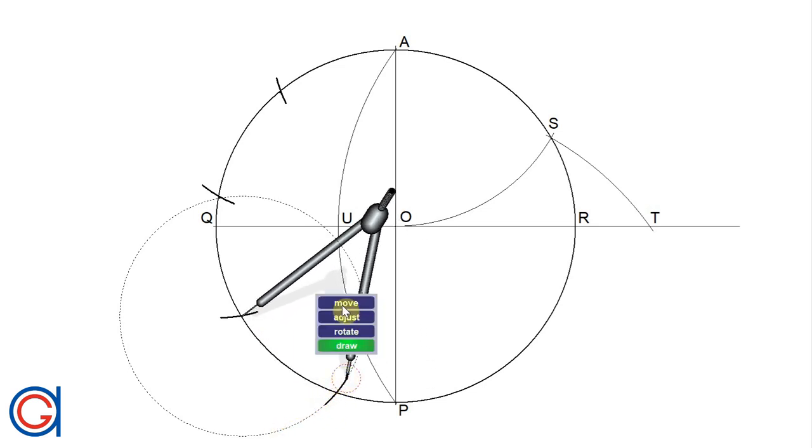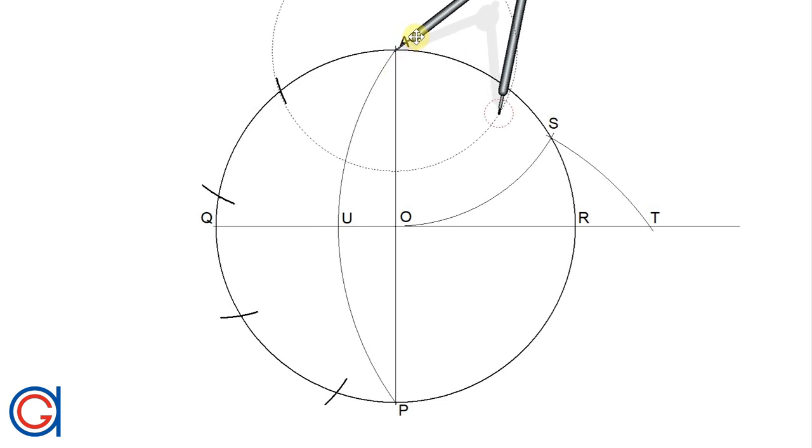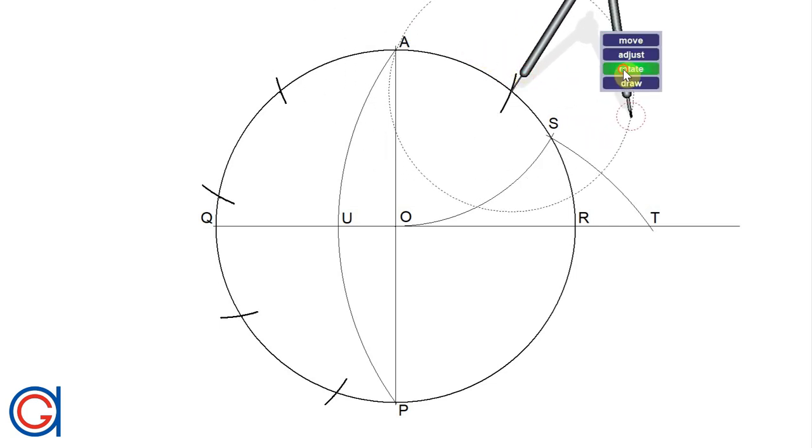And one more division. And now we will start with A again and do the other side of the circle. We do this to balance any minute inaccuracies we might get from using the compass.